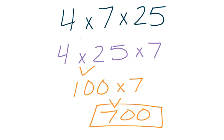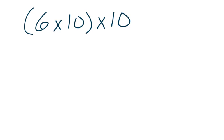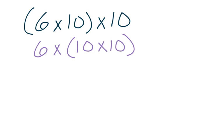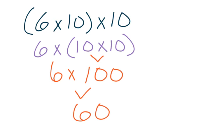Let's take a look at another problem. Here we have 6 times 10 times 10, and we notice that 6 times 10 is in parentheses to start with. Normally, order of operations would tell us to do what's in the parentheses first. We can use the associative property here, which tells us we can change where our parentheses are and change which numbers we multiply first in a problem that's all multiplication. So we'll multiply 10 times 10 first to get 100, then multiply times 6 to get 600.